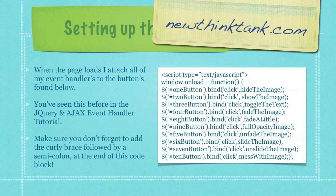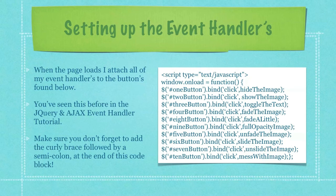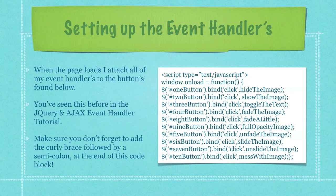When the page loads, I attach all of my event handlers to the buttons that you will see in the HTML code below. You've seen this before in the jQuery and AJAX event handler tutorials in the past, so I will not go into detail exactly what's going on. I want to specifically draw your attention to make sure you don't forget to add the curly brace followed by a semicolon at the end of this code, because this is a common error made.